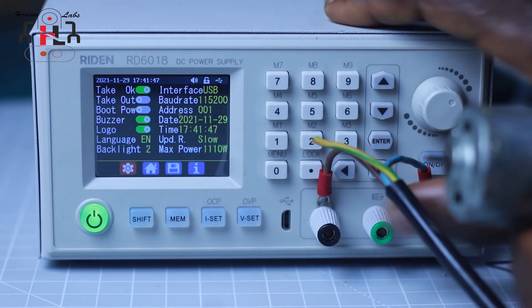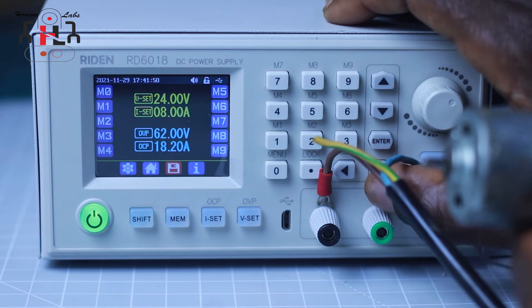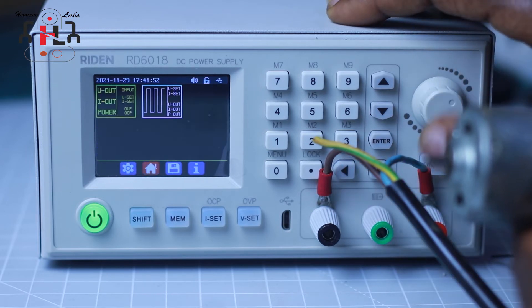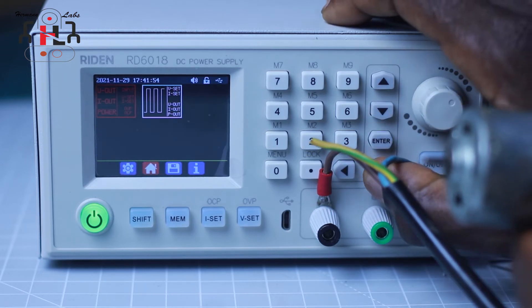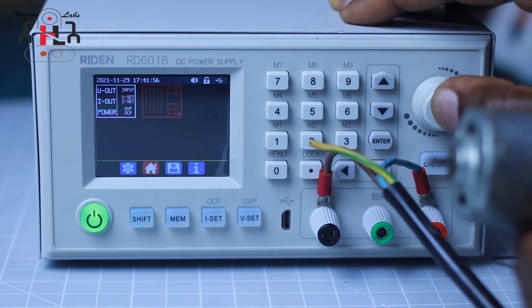With this power supply, we have the ability to view the graph of voltage and current, which is kind of an oscilloscope, but at slow frequency.